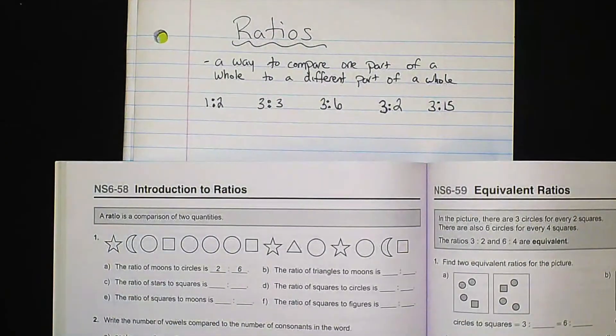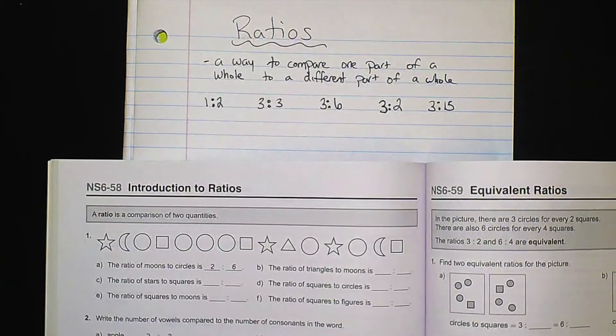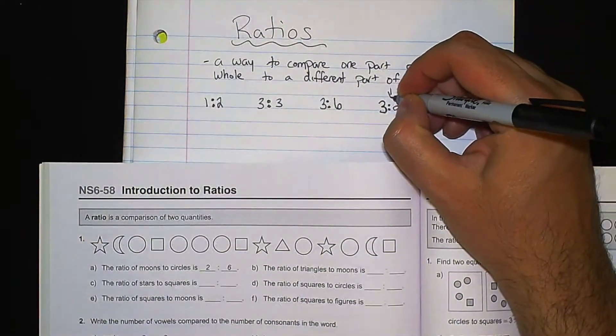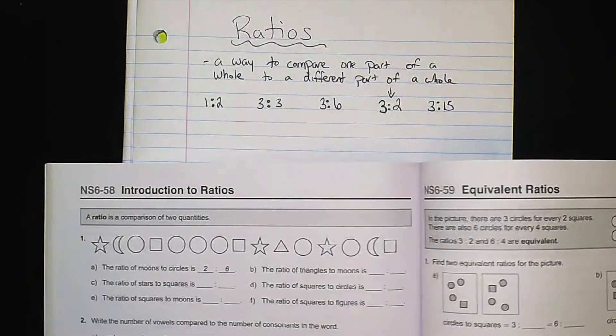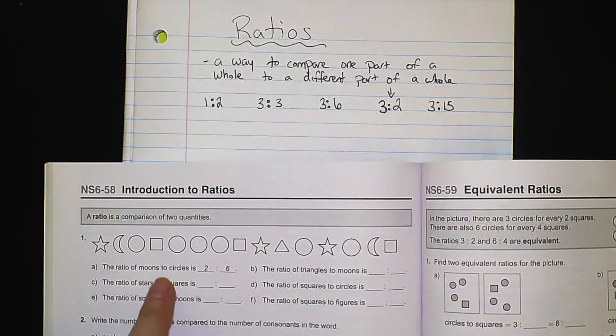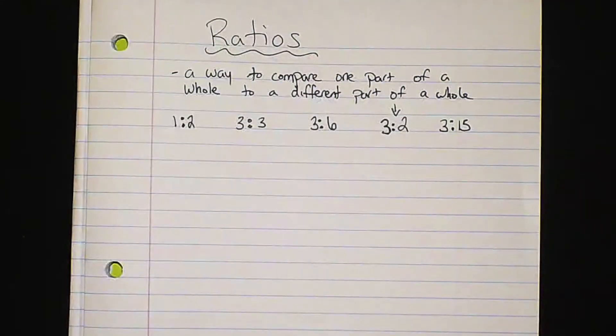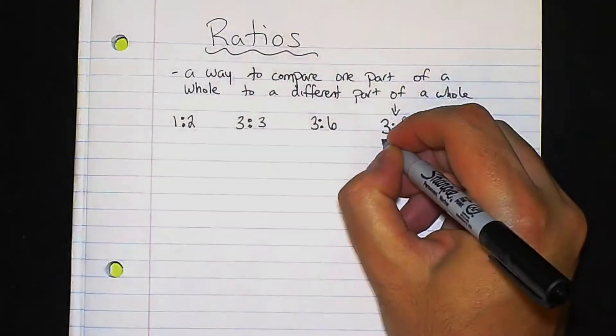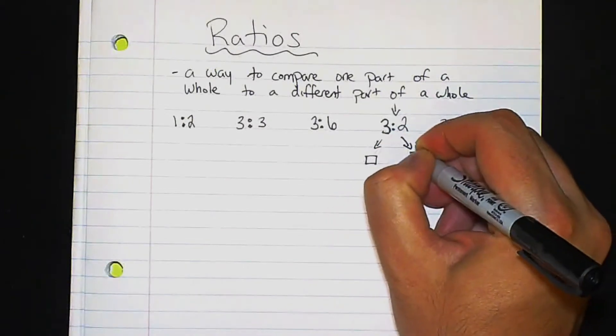Okay so that's how you would write a ratio. Now I want to look at this one over here. This one was squares to moons. So squares there were three, moons there were two. So I'm going to remove the book for now. I want to have a look at this one. So we knew that there were three squares and two moons.